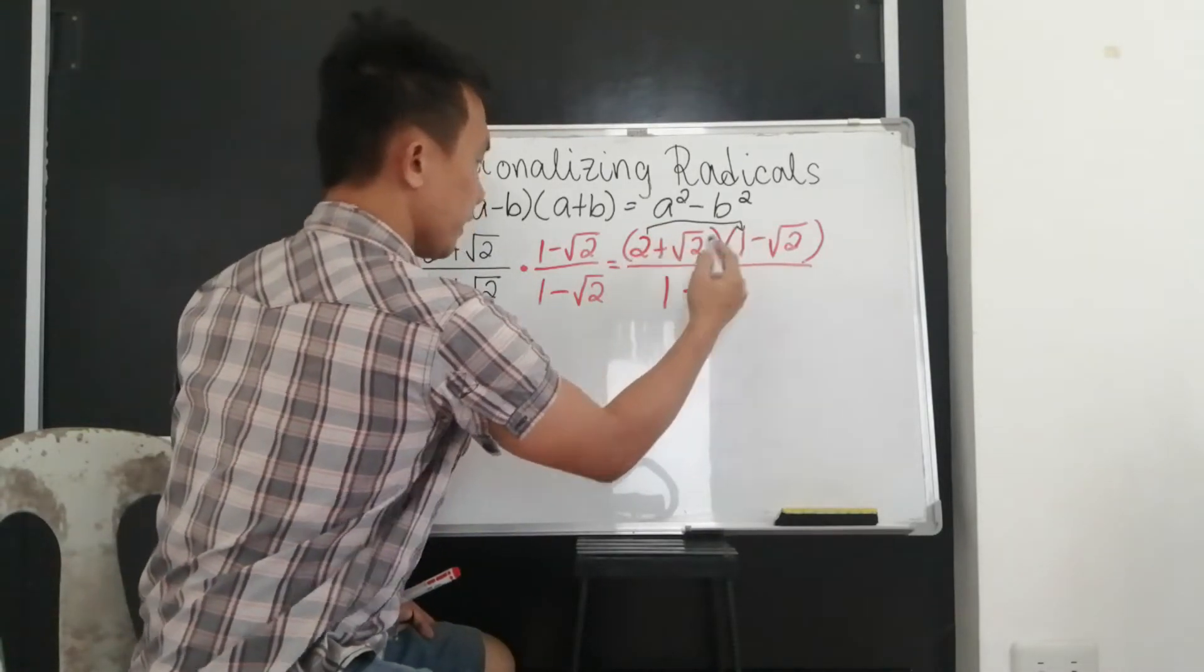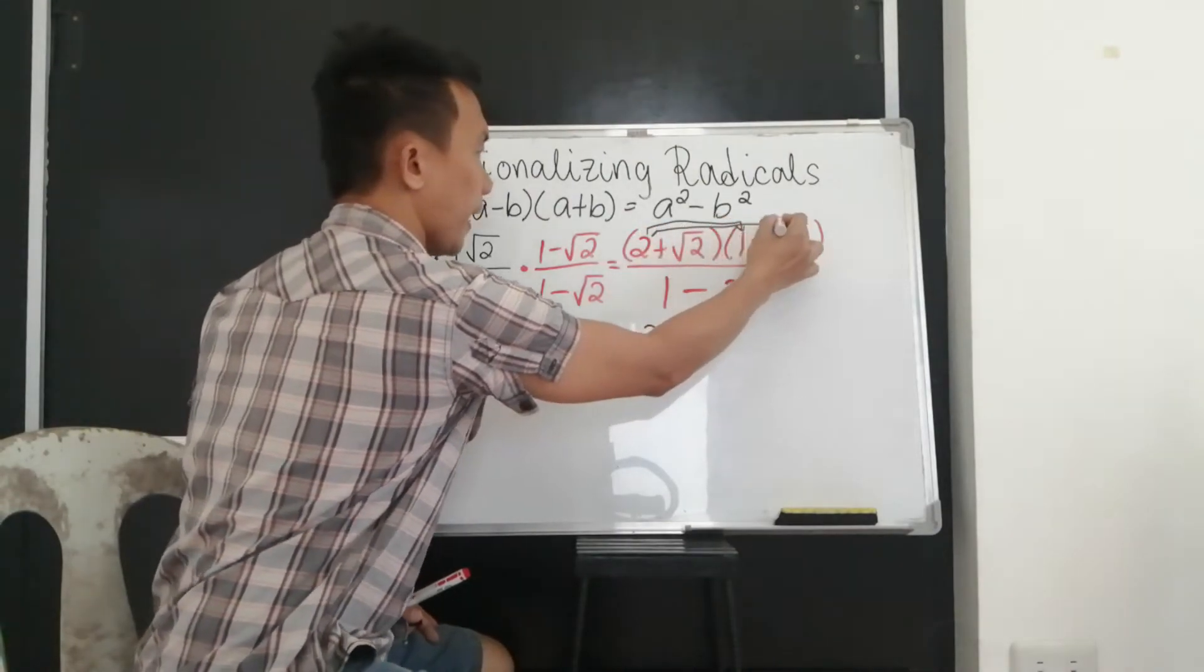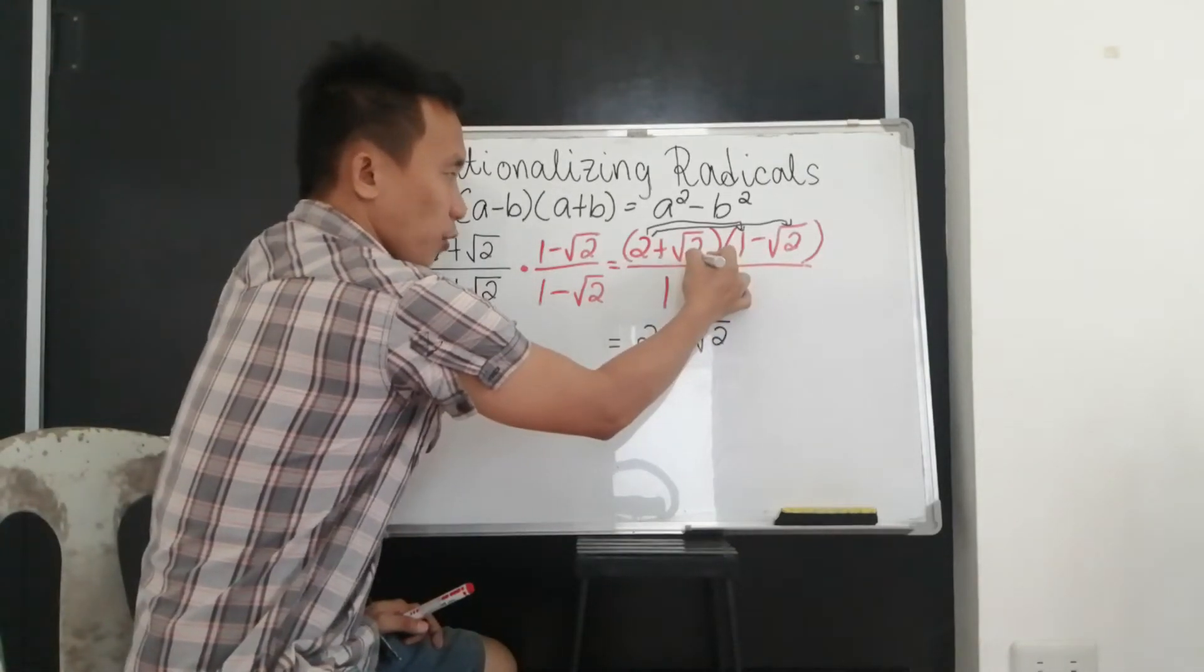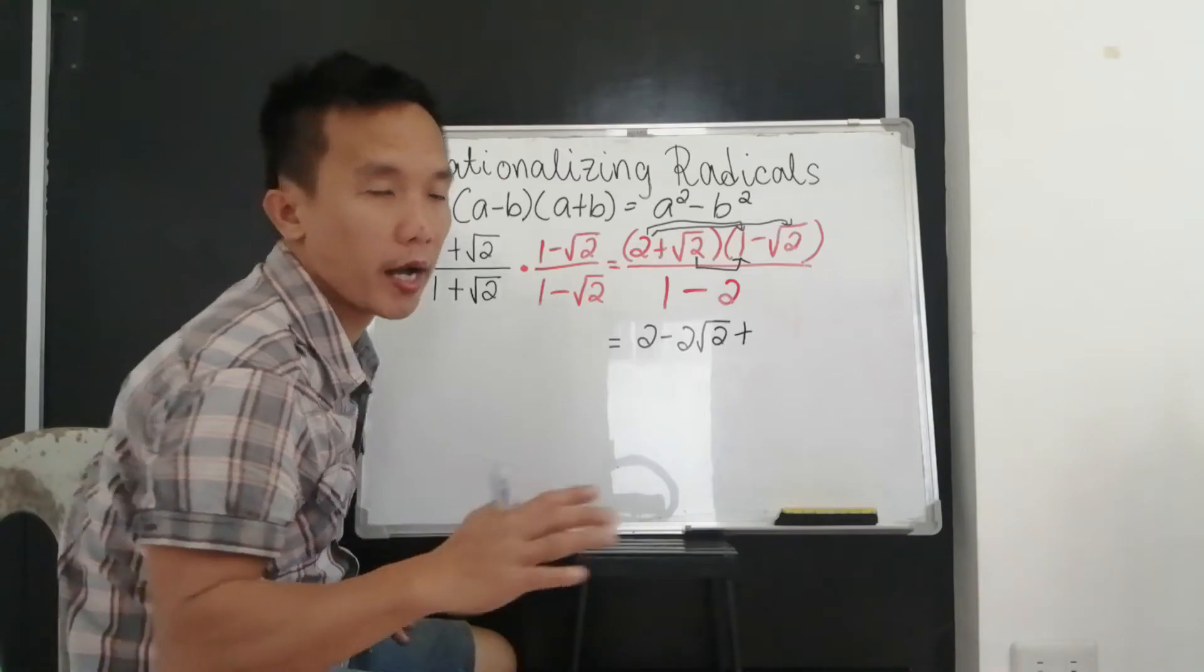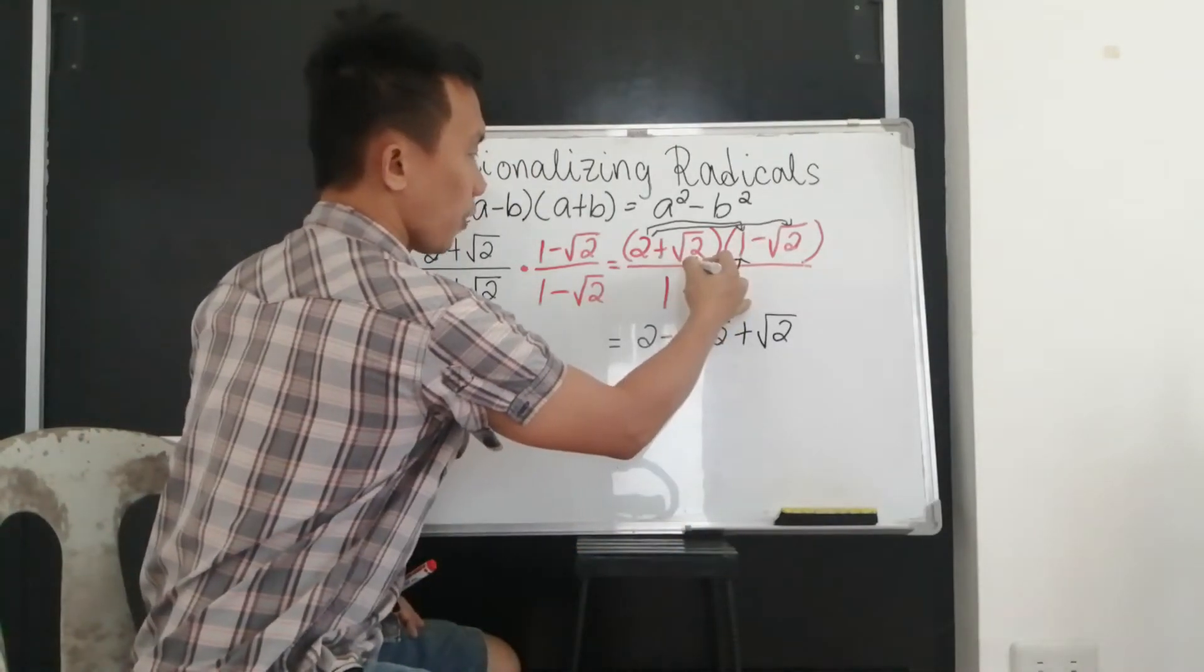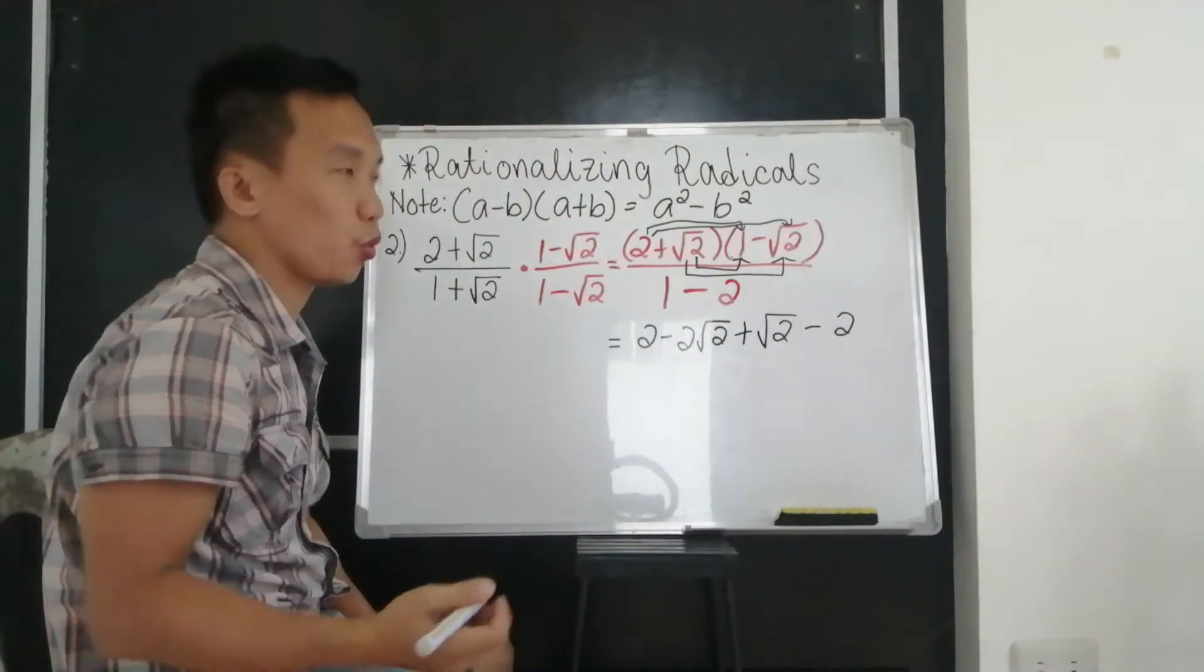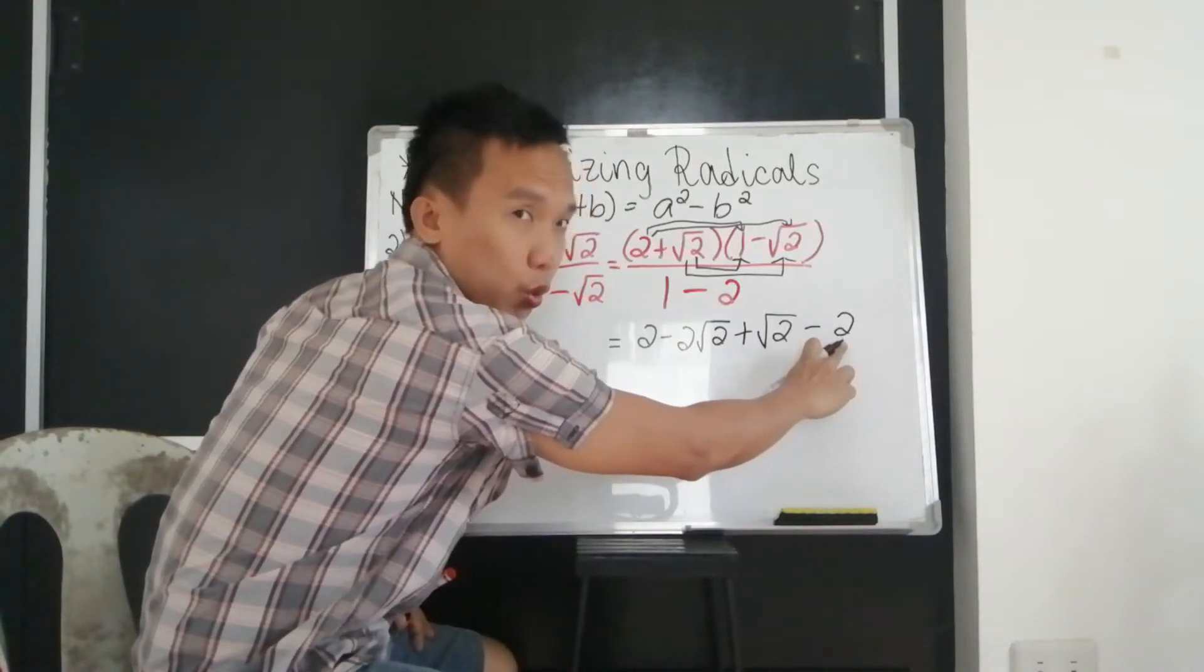Then after, use the foil method for our numerator. So 2 multiplied to 1, so that will be 2. Then this 2 will be multiplied to negative square root of 2. That will be negative 2 square root of 2. Then this square root of 2 will be multiplied to 1, so that will be positive. So we will not write anymore the number 1 because it's understood already that there is 1 beside square root of 2. And square root of 2 will be multiplied to the negative square root of 2. So take note now, they are the same, so it will just be 2. Because 2 times 2, that will be 4. And square root of 4 is just 2.